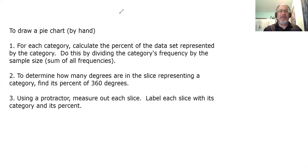Now, I do have a list of steps on how to draw a pie chart by hand. But instead of going through all three of these steps and then showing an example, we'll look at step one, put it in play an example. Step two, put it in play an example. And then step three. Step one, for each category, calculate the percent of the data set represented by the category. Do this by dividing the category's frequency by the sample size. In other words, the sum of all the frequencies.